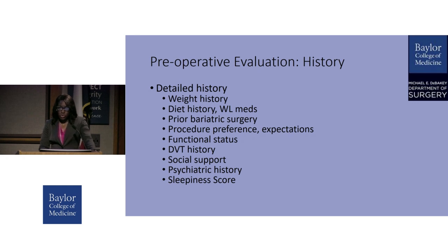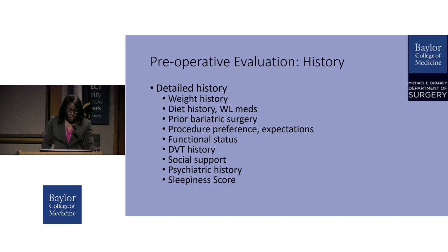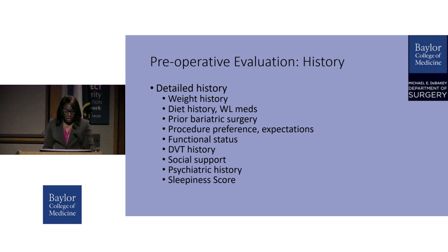We take a very detailed history on our patients — the routine history and physical, but in addition we collect information such as waist circumference and neck circumference. I always begin with a discussion about their weight history, their weight loss goals, when they started gaining weight, and what they believe might have contributed to their weight gain. We also ask about their diet history and any weight loss medications they've taken.